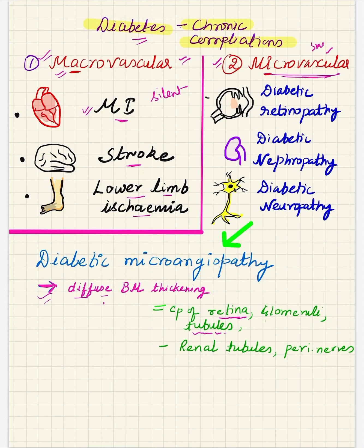The second category is microvascular complications, which affect small-sized arterioles. Associated diseases include diabetic retinopathy, in which vessels of the retina are affected, diabetic nephropathy, and diabetic neuropathy. When there is microvascular complication, we use the term diabetic microangiopathy. A common manifestation is diffuse basement membrane thickening, which can affect the capillaries of the retina, glomeruli, renal tubules, and peripheral nerves.